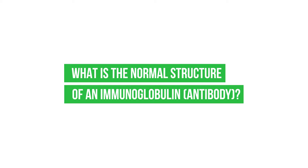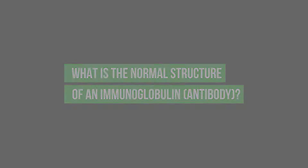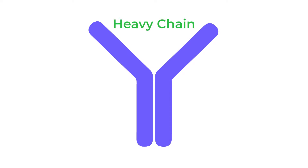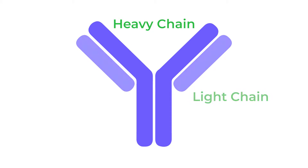What is the normal structure of an immunoglobulin or an antibody? Antibodies have a structure, like anything that you build has a structure. They have something called a heavy chain and they have something called a light chain, and it's typically depicted in a picture as a Y.